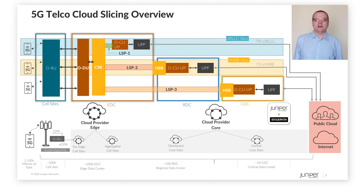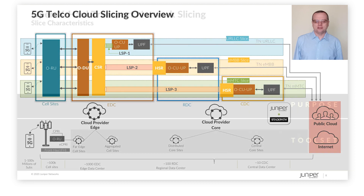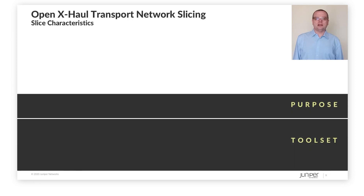LSP2 with different characteristics — for example, high bandwidth guarantees but not necessarily low latency guarantees — is used for the eMBB slice. And another LSP, LSP3, is used as the underlay transport mechanism for the mMTC slice. An OpenXL transport slice can be described as three distinct slice characteristics.